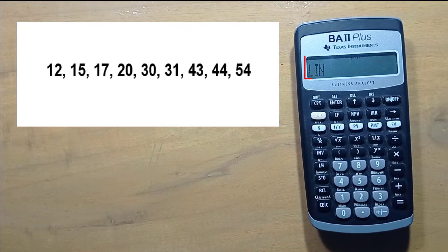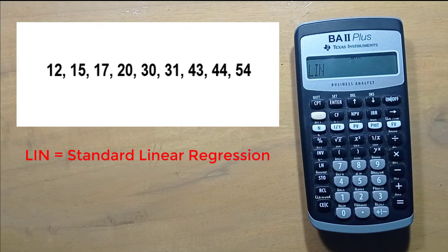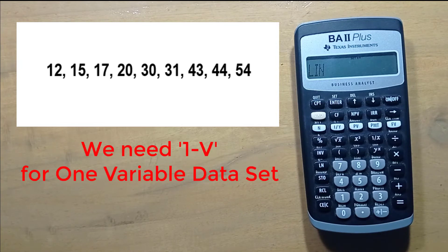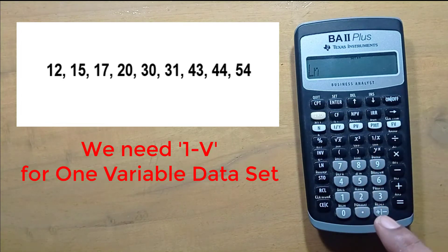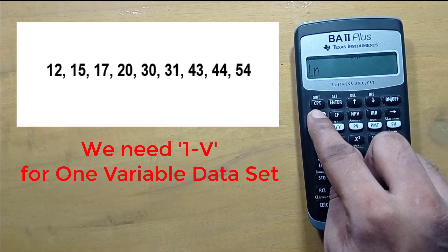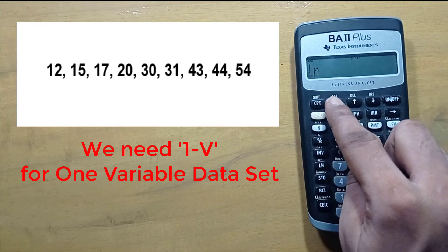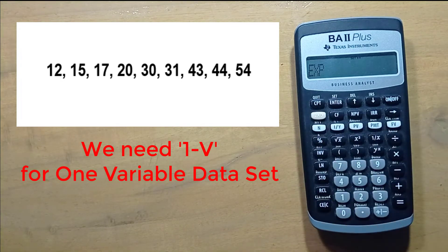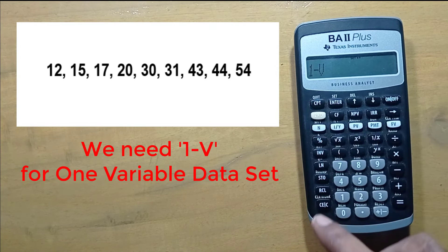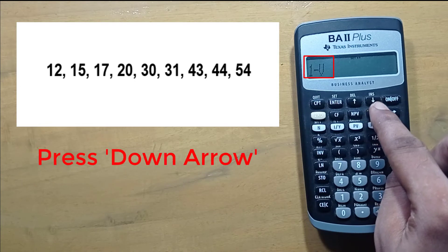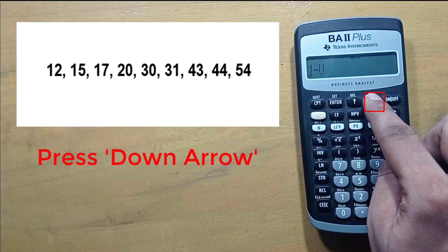By default this calculator shows lin, which is for standard linear regression, but we need 1-v, which is for one variable data. Press 2nd and enter to change the function. Keep changing it by pressing 2nd and enter until we get 1-v. Now we have 1-v, just press the down arrow button to select it.